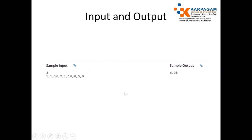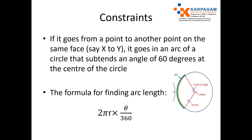The N values range from 2 to 10. The beetle does not go to the bottom face. For sample input: N equals 3, meaning three Cartesian coordinate values separated by commas — 1,1,10 then 2,1,10 then 0,5,9. The output will be 6.05. I will explain how to calculate this.